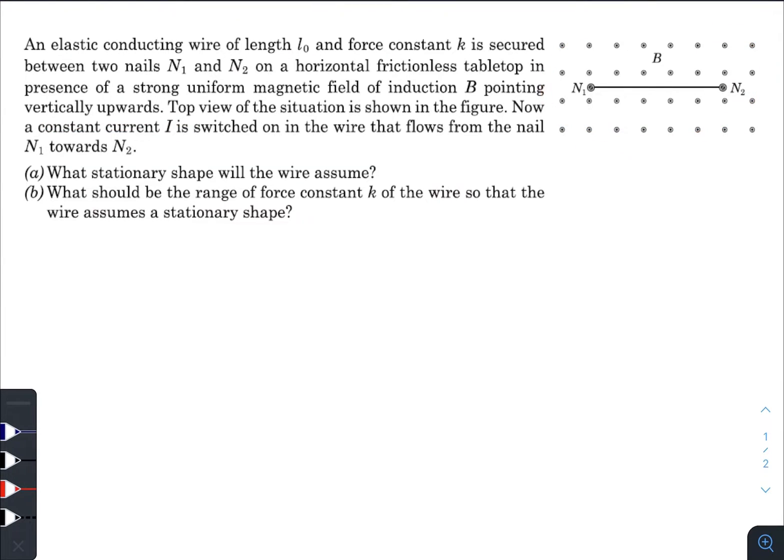This is the top view of the situation. Now a constant current I is switched on in the wire that flows from the nail N₁ to N₂. What stationary shape will the wire assume?